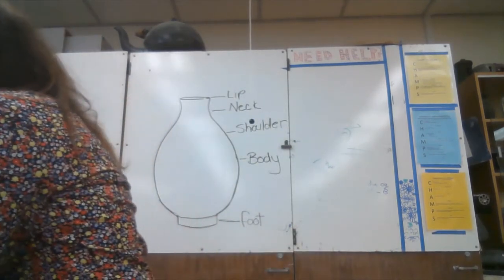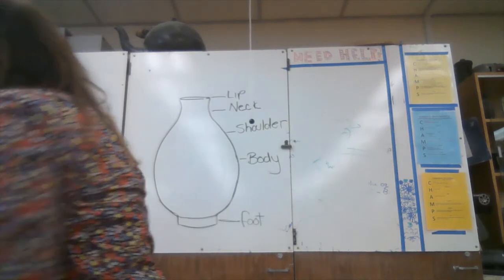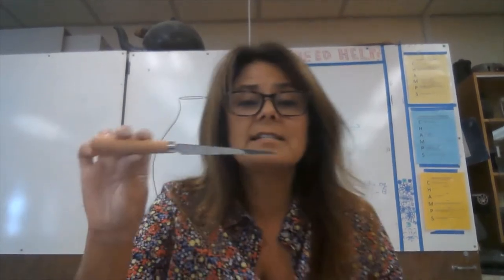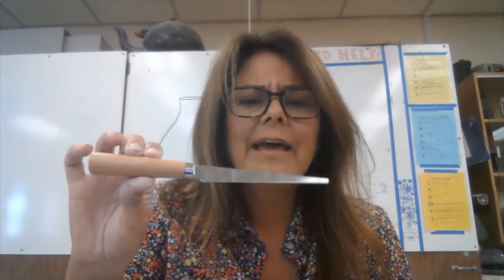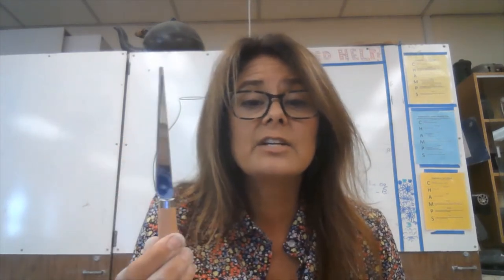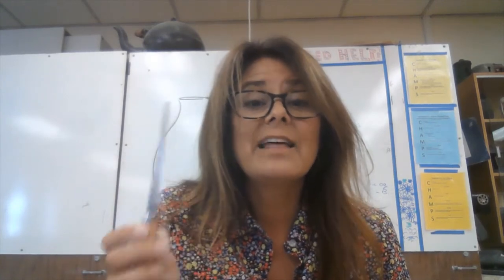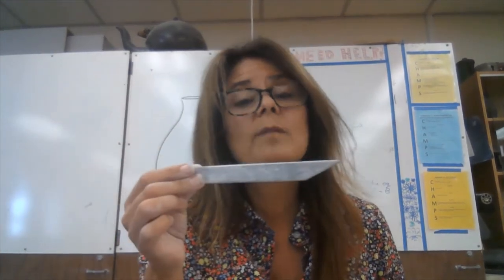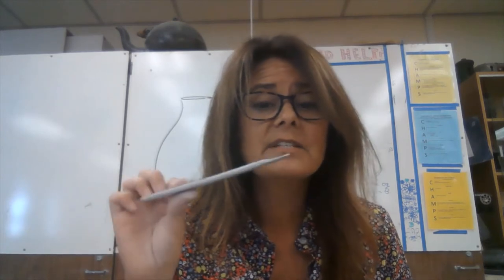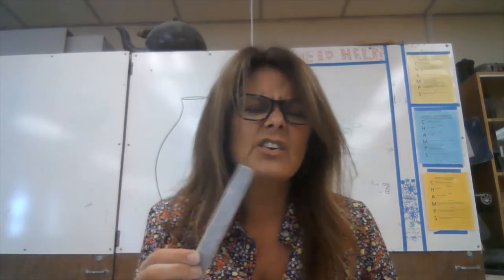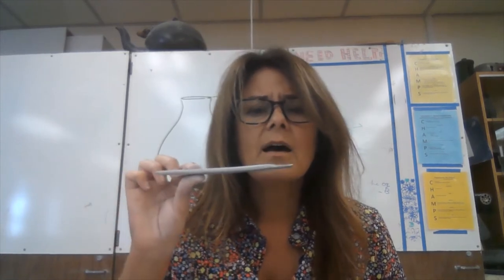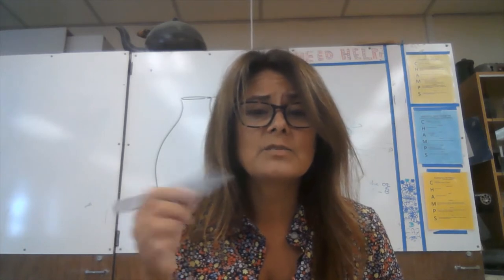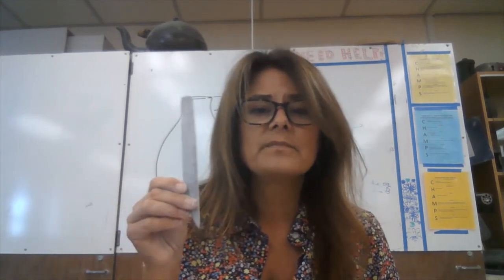Now let's talk about tools. The fettling knife is used to cut clay — especially good for leather hard clay, making a nice clean cut. A good home alternative is a butter knife or steak knife. The wood tool or modeling tool can cut clay and is also used for welding — bringing the edges of attached clay together. A popsicle stick or the end of a butter knife works as a home alternative.